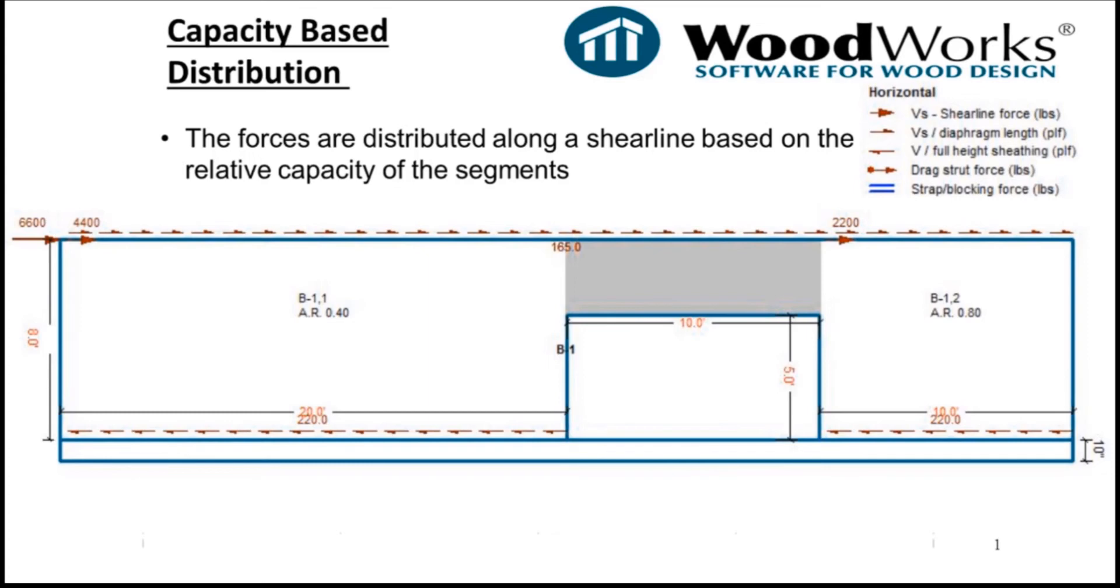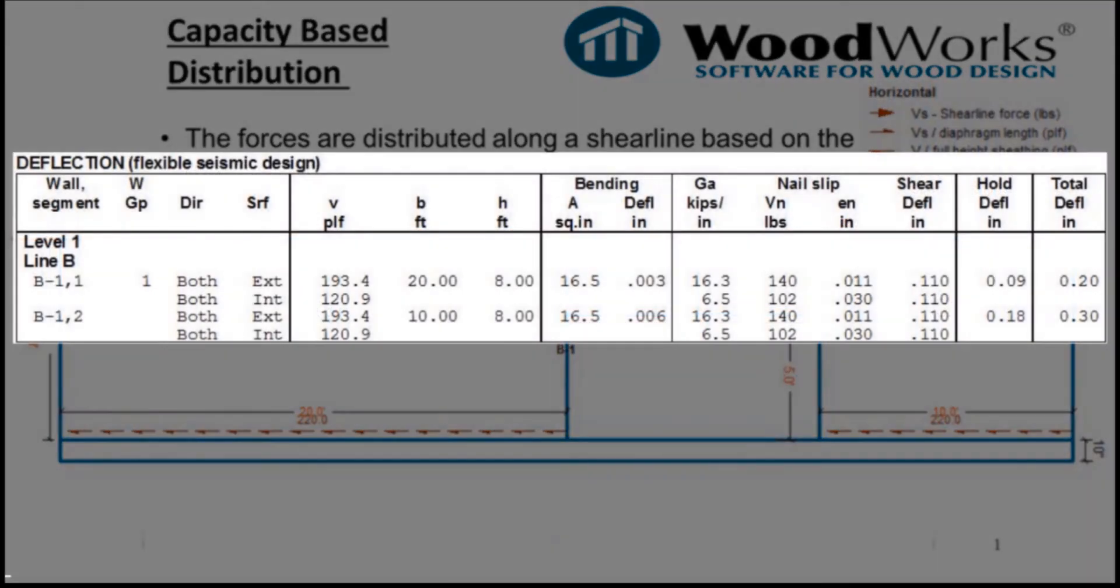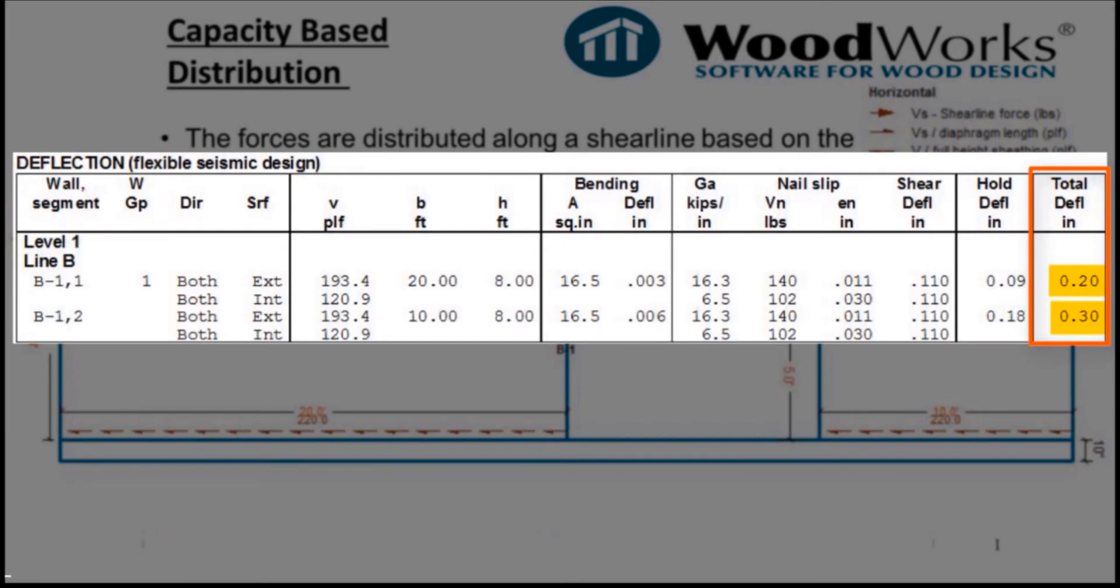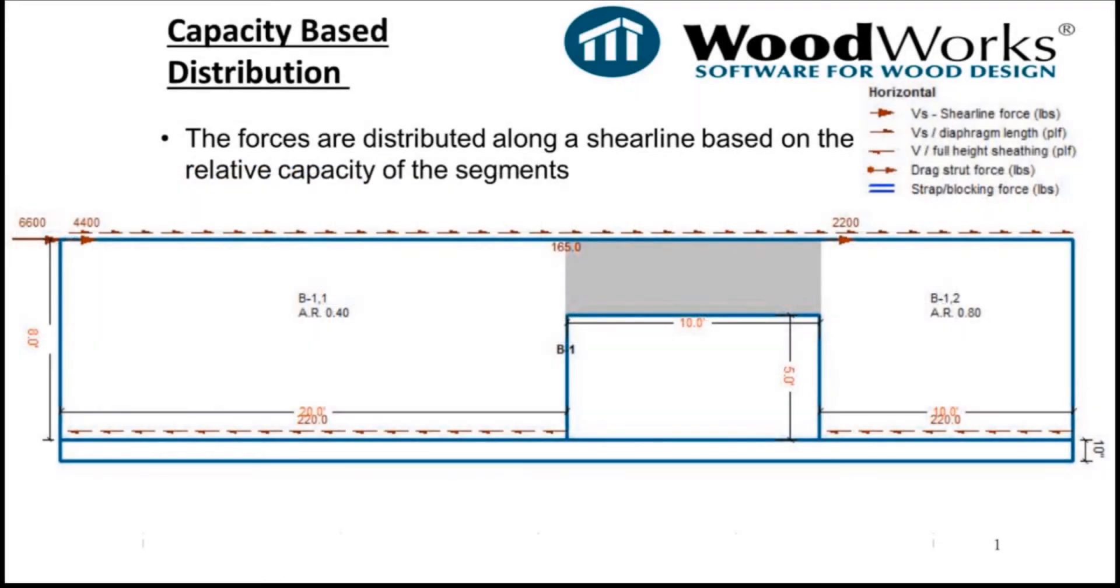However, since the capacity distribution approach is an approximation, theoretically the deflections are not necessarily going to be equal. If we take a look at the deflection results, we can see that indeed the total deflection is not the same along the two wall segments. This is because the total deflection on each segment is calculated based on its respective shear force distributed to it.